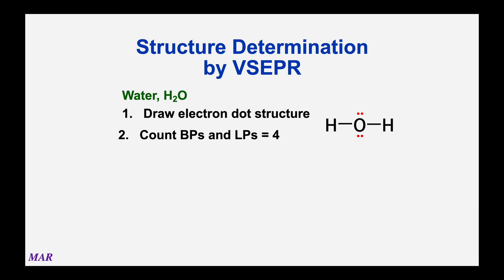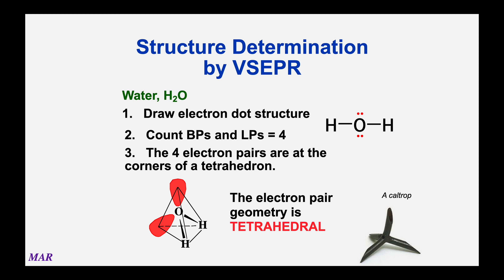Like before, we count bonding pairs plus lone pairs. Oxygen has two lone pairs and two bonding pairs — that's four pairs total, or four clouds. That means this is going to be another tetrahedral electron pair geometry. Anytime you have four bonding pairs plus lone pairs total, it's going to be tetrahedral. You can imagine the oxygen in the middle of a caltrop shape, with one hydrogen here, another hydrogen there, and the lone pairs taking up two of those four spaces.